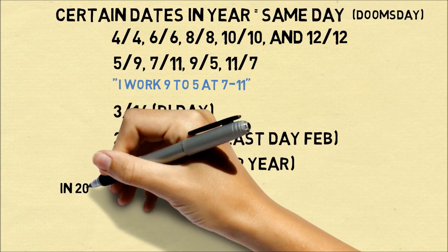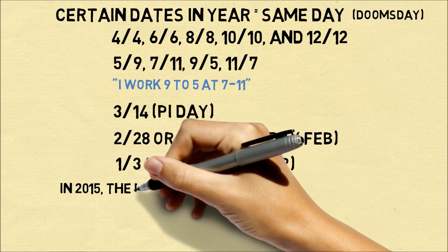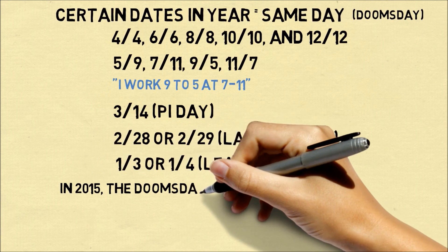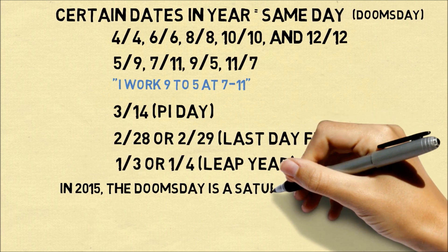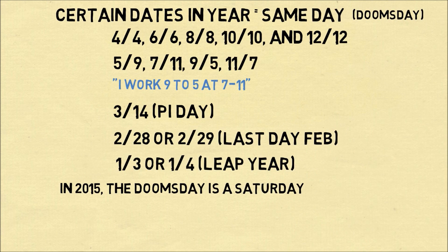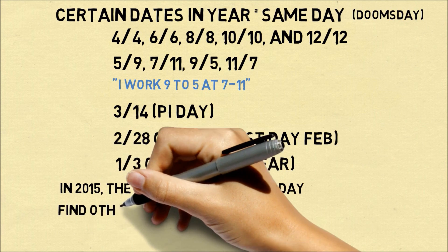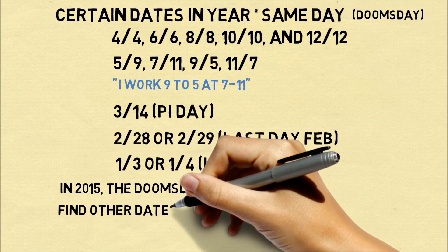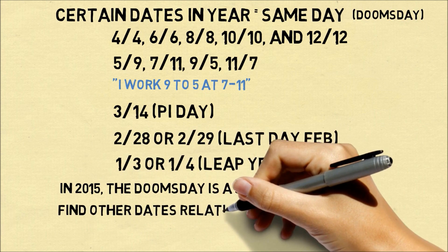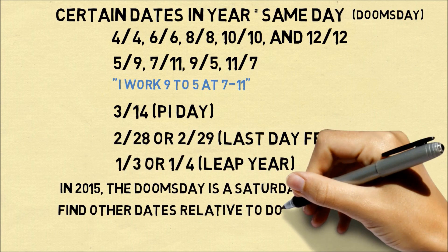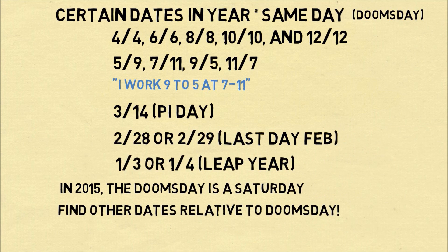So how is this useful? Let's take a look at 2015. The doomsday will be a Saturday, so January 3rd will happen on a Saturday. We can find every other date in the year relative to the doomsday.